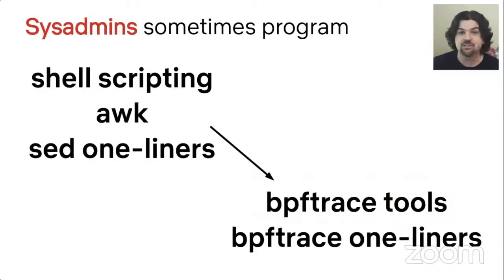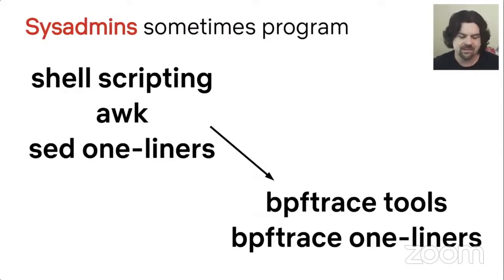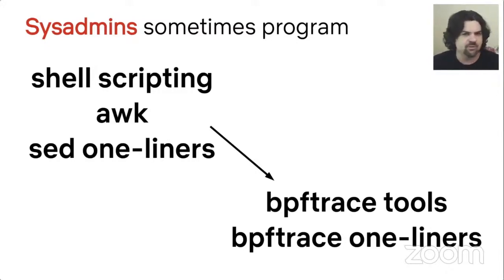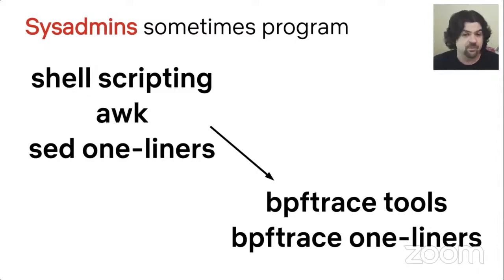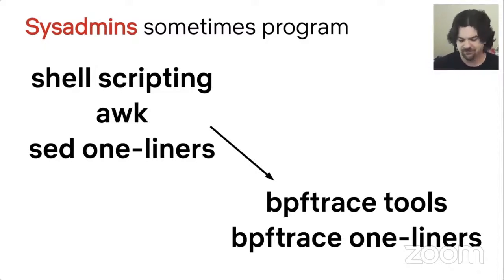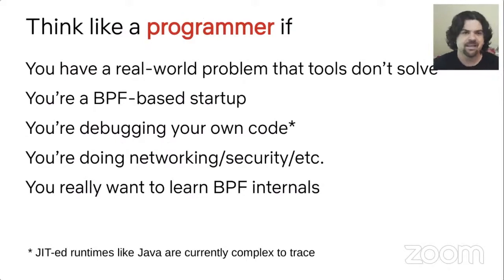Thinking like a sysadmin means installing something and using it without necessarily programming. But sometimes sysadmins do program — sometimes you need to do something a little beyond what the canned software provides. Sysadmins will do some shell scripting and some awk or sed. The equivalent for performance observability is BPFtrace, which is very much like awk and allows you to write simple tools and one-liners that go beyond the canned tools.